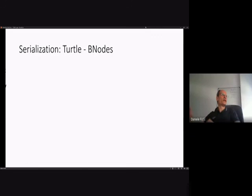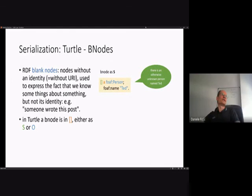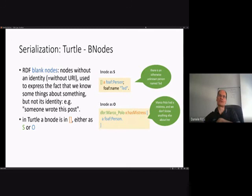RDF also has a concept of blank nodes, reflected in Turtle serialization. Blank nodes are nodes without an identity, used to express that we know something about something but not its identity — for instance, that someone wrote a post. A blank node may be used as a subject, such as 'an otherwise unknown person named Ted', or as an object, such as 'Marco Polo had a mistress and we don't know anything else about her'.